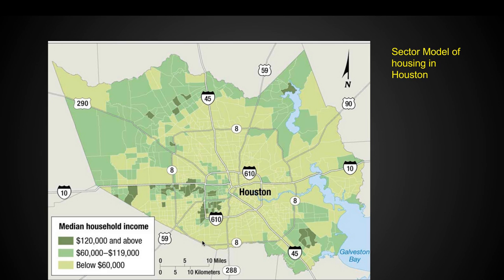The sector model of housing in Houston shows how expensive things are. As you can see, the most expensive housing — shown in darkest green — is organized in sectors. This wedge of the most expensive housing comes all the way out from the central business district. The ring doesn't really go all the way around, so it doesn't fit the concentric model. But housing organized more in wedges fits the sector model well.